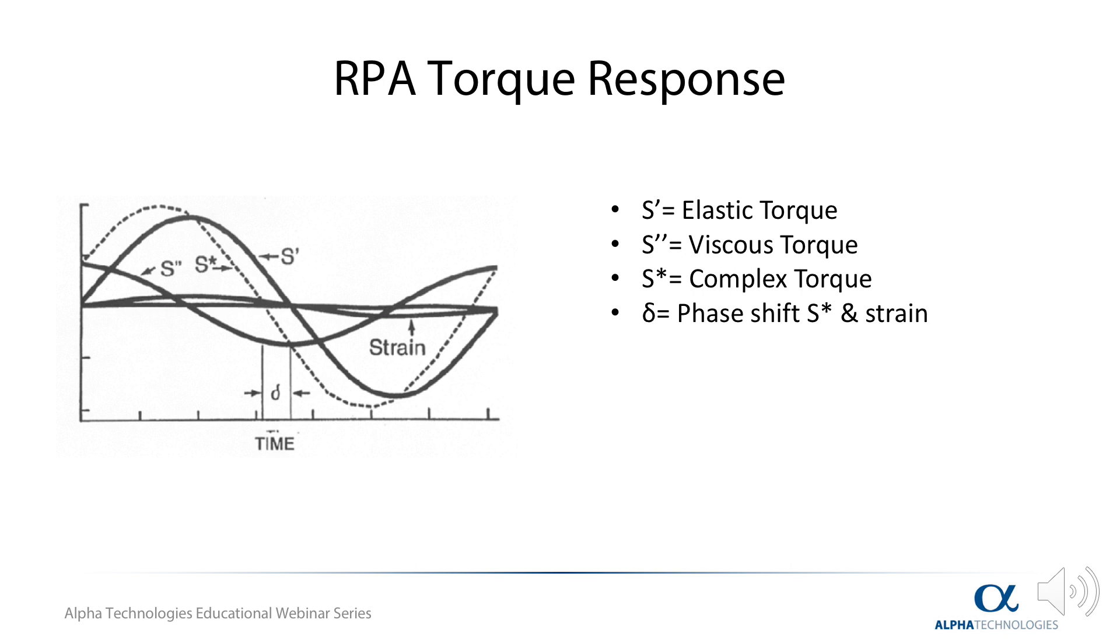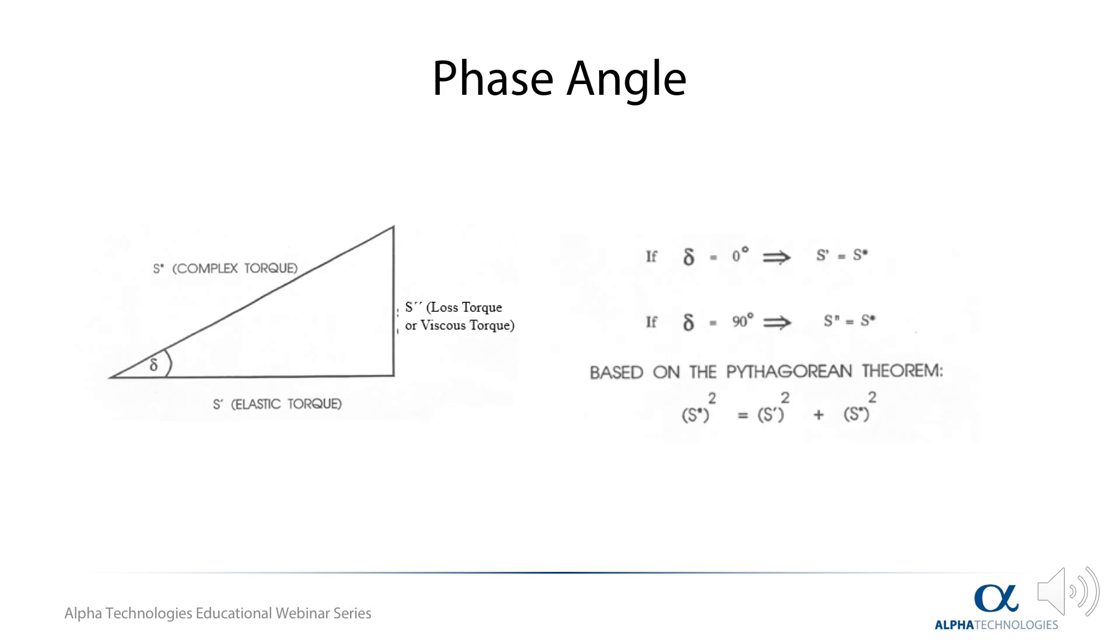From these measurements, it is then possible to directly calculate shear modulus represented by G, which is a significant scientific property of materials.